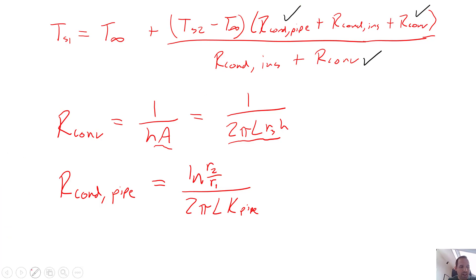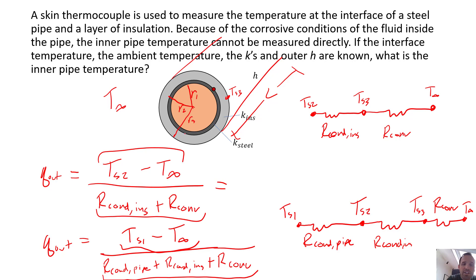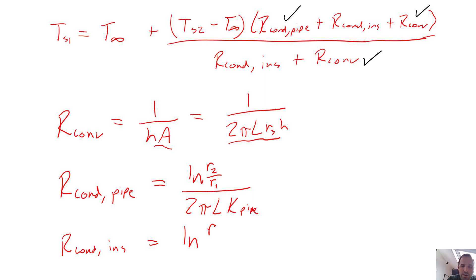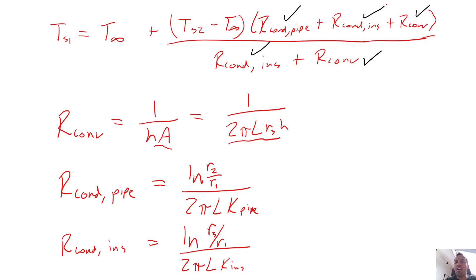The conductive thermal resistance of the insulation is equal to ln(R3/R2) divided by 2πLk_insulation, where the insulation spans from radius R2 to radius R3, so we use those radii instead. With all thermal resistances defined, we know everything in the equation and have successfully solved for the inner surface temperature TS1 without requiring any extra measurements, which could be expensive and require a lot of maintenance.